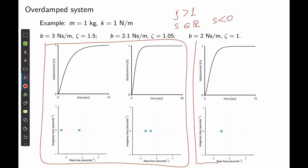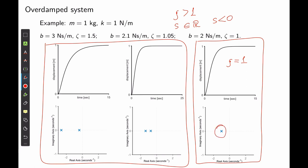When ζ = 1, both poles are the same — they meet at the same location on the real axis. This characterizes a critically damped system: the damping ratio is exactly 1, the poles are real numbers located on the left side of the s-plane, and they are identical.